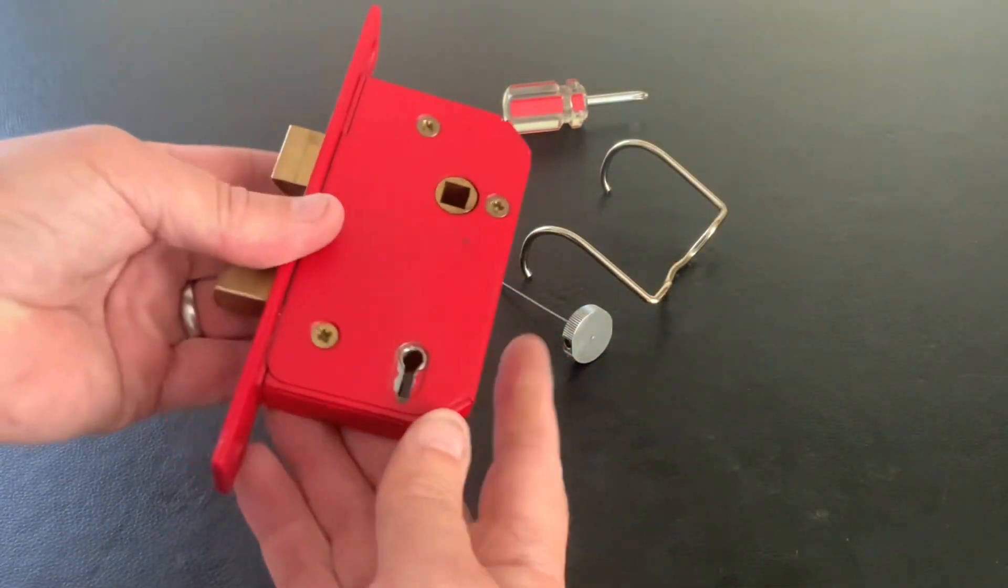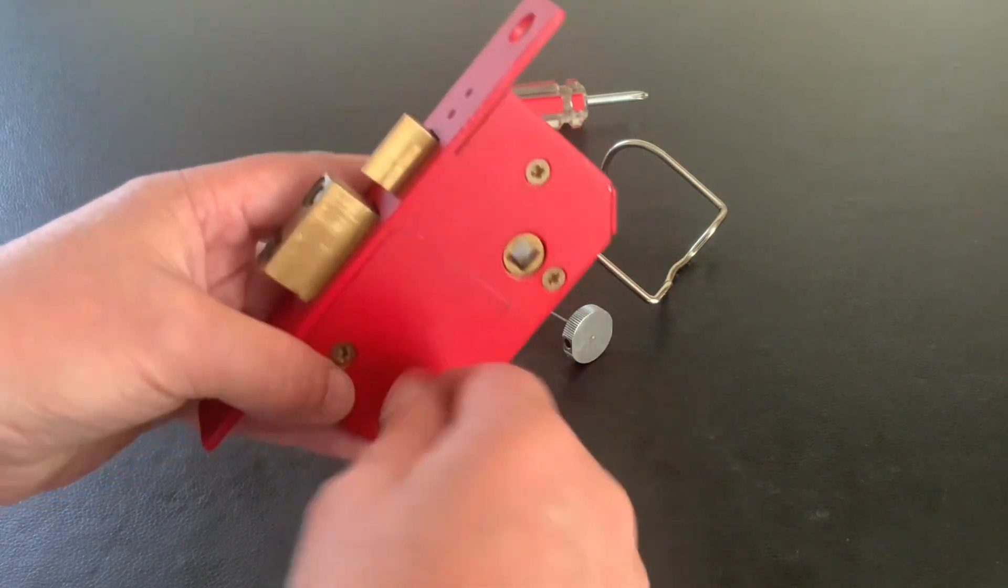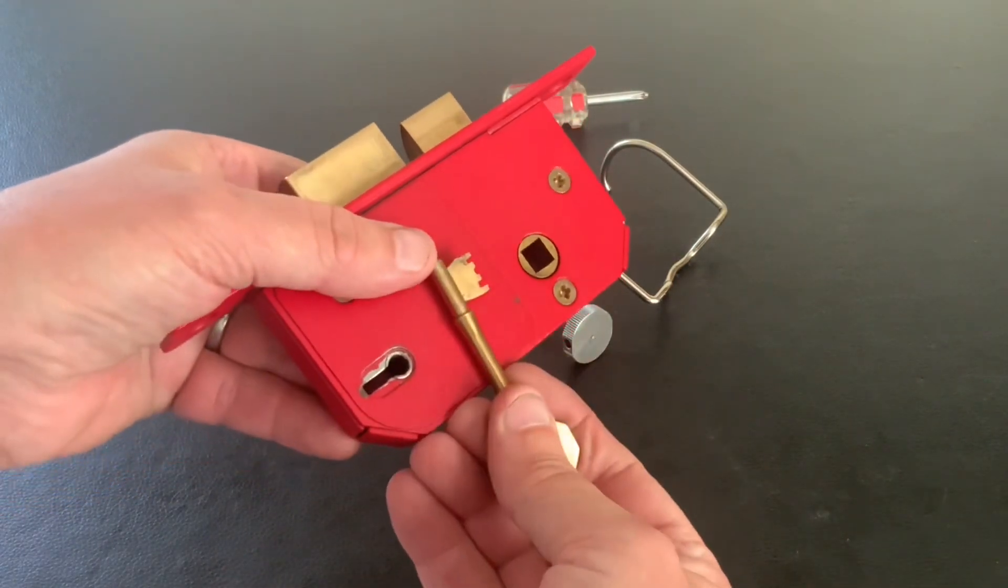I've been messing about again, can't help myself. I've got another ERA mortise lock. I have picked this one a few times. It's not a hard lock to pick, but it's all intact with anti-pick notches in there.